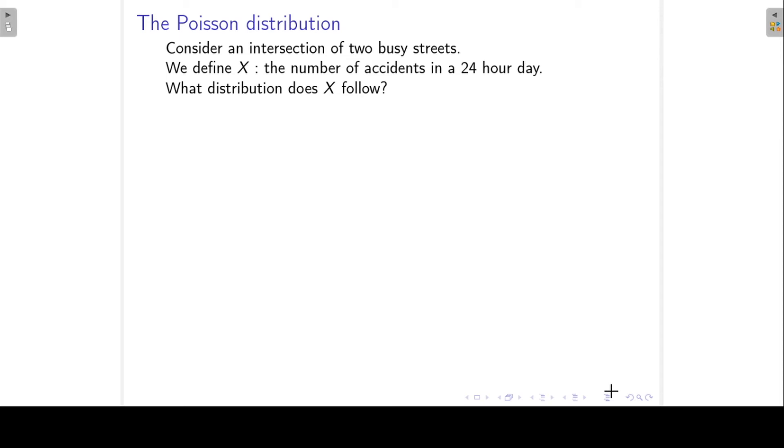We have looked at the binomial distribution as a special discrete distribution. The next discrete distribution that we will look at is the Poisson distribution. And we will start with an example.